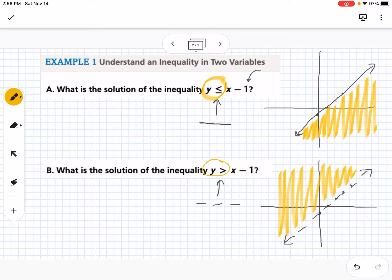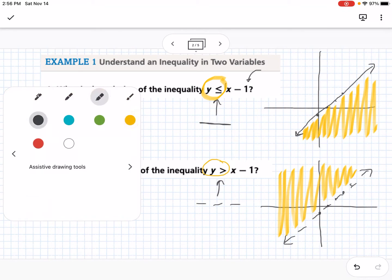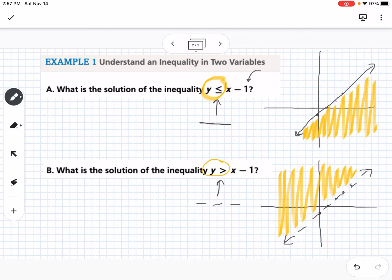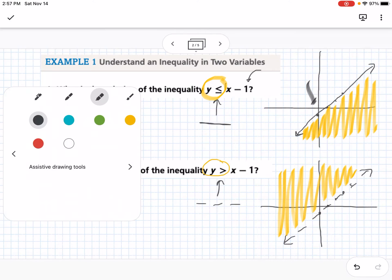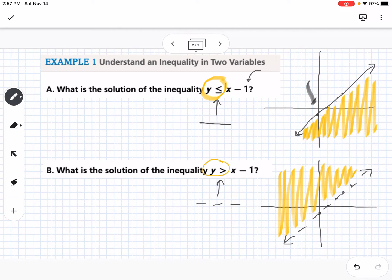If you're ever not sure about where to shade, pick a point, any point. I always like to pick 0,0 because 0,0 is either going to work or not, so if we look at the top graph, if I plug in 0,0, I would get 0 is less than or equal to 0 minus 1. So I would get 0 is less than or equal to negative 1. That's not true. That's a false statement, so that means I would not be shading where 0,0 is on my graph. But if I come down here to the bottom one, 0 is greater than 0 minus 1. Is 0 bigger than negative 1? Yes, it is. So that's why the bottom one, 0,0, is in the shaded region.